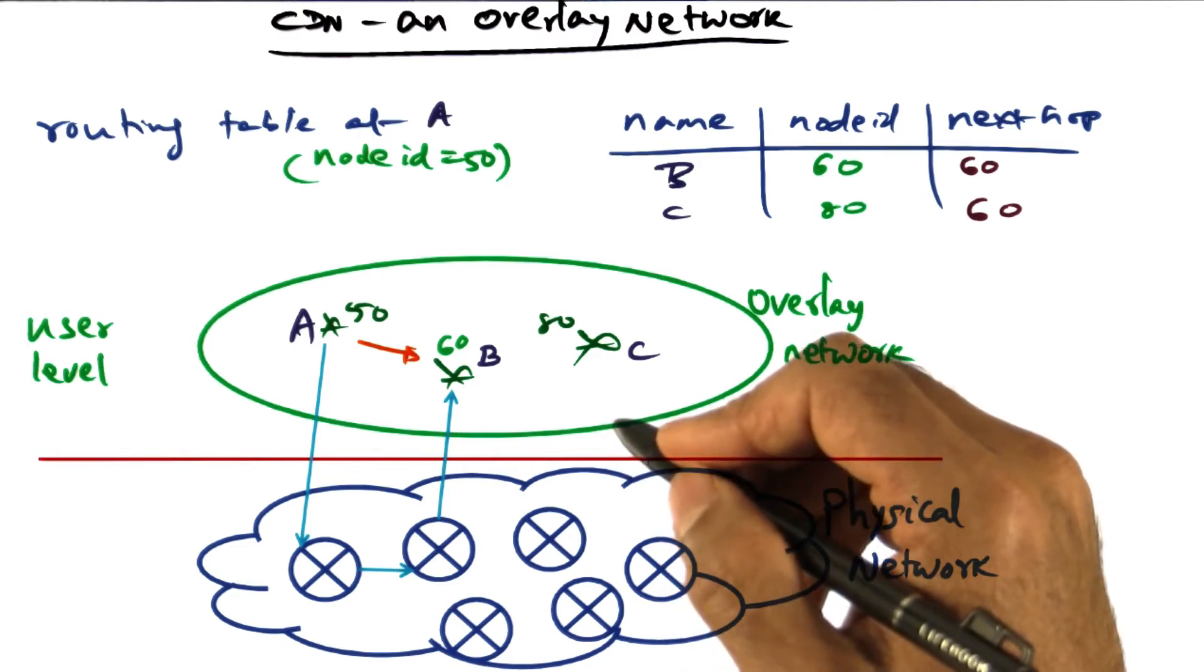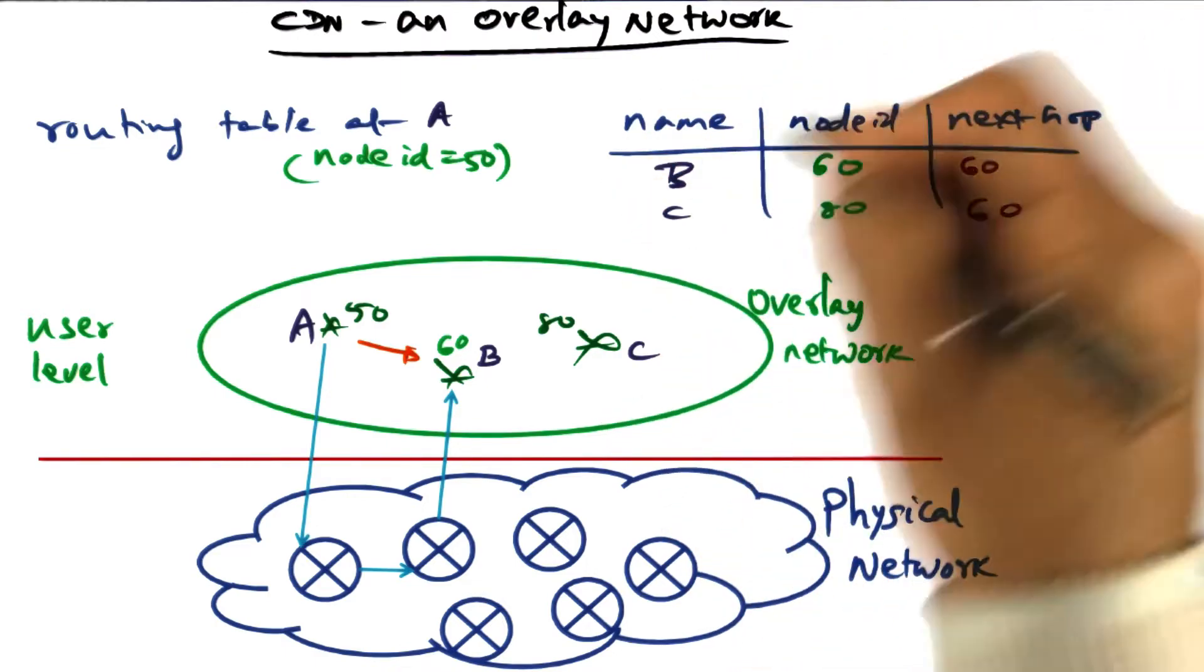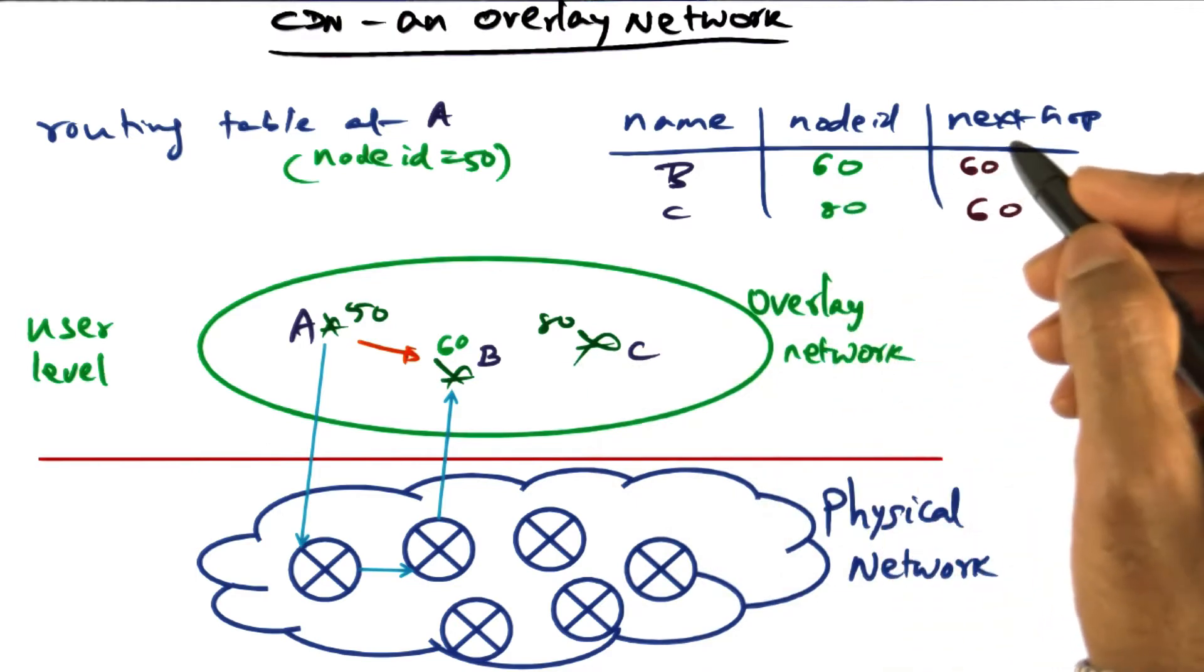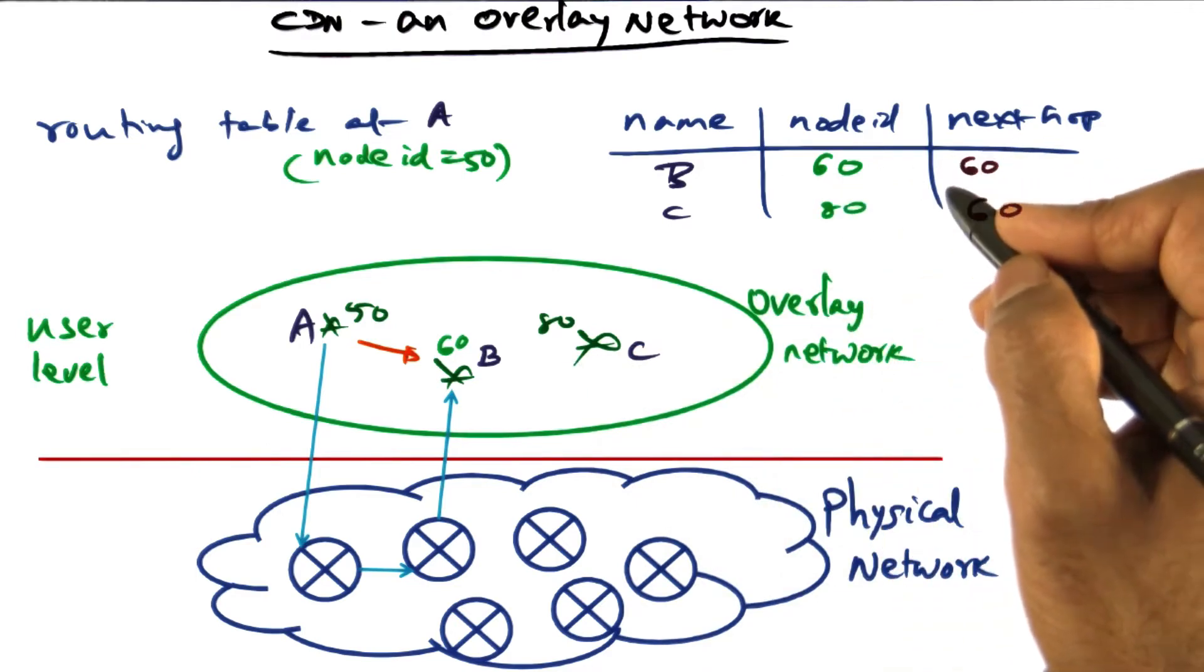So we, as friends who have decided to form a social network to share information and content, have exchanged such mapping information and constructed a routing table at the user level. And this is what is called an overlay network—a virtual network on top of the physical network.